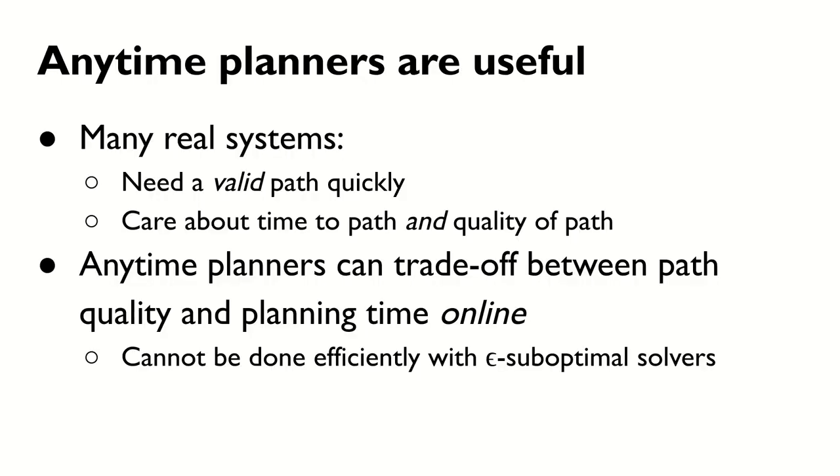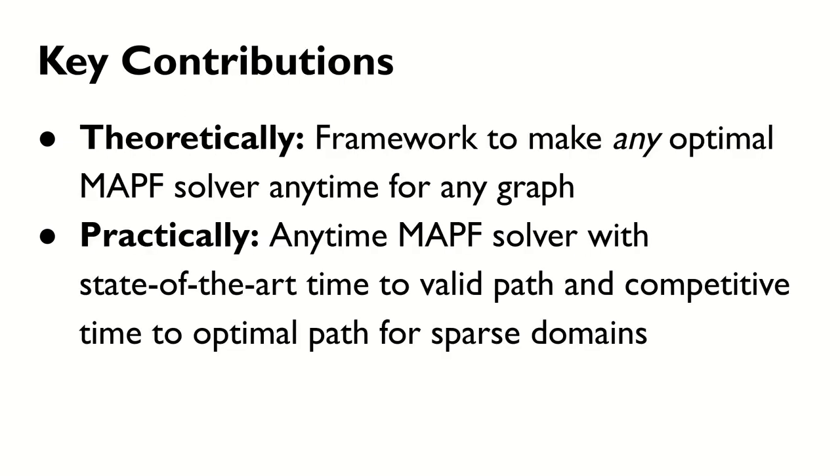Stepping back from our RoboCup example, anytime planners are really useful in general. Many real systems need a valid path quickly, but they also care about time to path and quality of path. Anytime planners, such as ours, can trade off between path quality and planning time online. This is not something that can be done efficiently with epsilon suboptimal solvers. If you run your plan, you're not happy with it, all you can do is start the solver over from scratch with a tighter epsilon bound and see what happens. As part of this work, we present two key contributions.